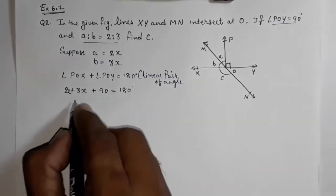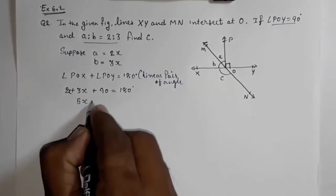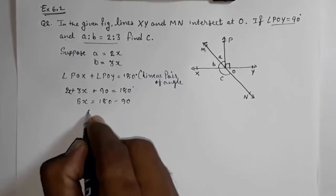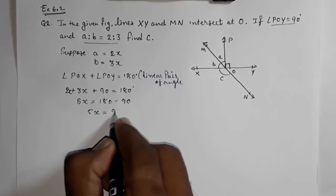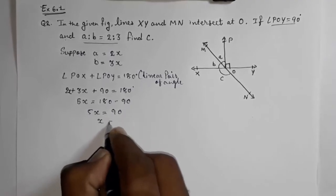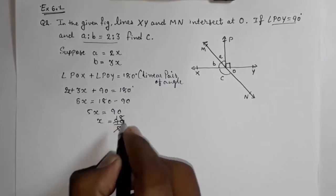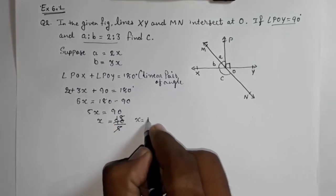Now take this 90 on that side. 5x is equal to 180 minus 90, so 5x is equal to 90. And x will be 90 by 5, so x will be equal to 18.